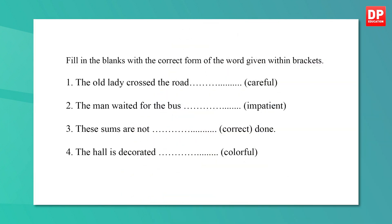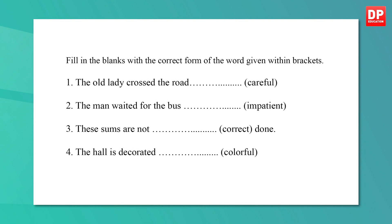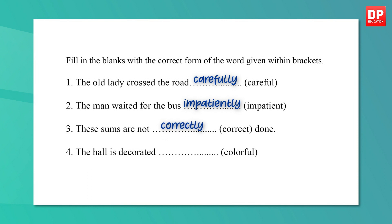Okay children, let's do another activity from the textbook. This is an adaptation of Activity 10 on the same page. You have four sentences with blanks and you have to fill in the blanks with the correct form of the words given within the brackets. You can pause the video and do it now. Let's read the completed sentences together: The old lady crossed the road carefully. The man waited for the bus impatiently. These sums are not correctly done. The hall is decorated colourfully. I hope you got all these correct.